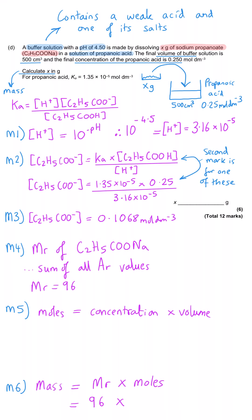And so we've just calculated our concentration of propanoate ions in mark number 3. So we need to multiply it by the volume, which was 500 cm cubed. But since we're using moles per decimetre cubed, we need to turn that 500 cm cubed into decimetres cubed by dividing by 1000. And so that becomes 0.5 dm cubed. And so the moles of sodium propanoate becomes concentration 0.1068 multiplied by volume, 0.5,